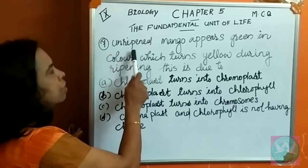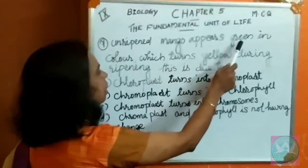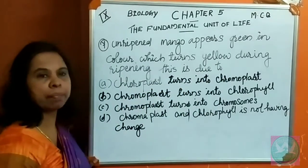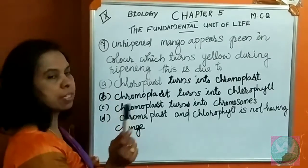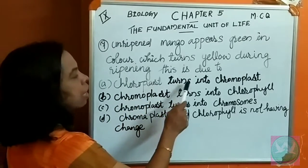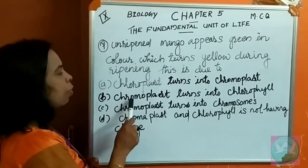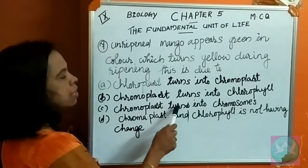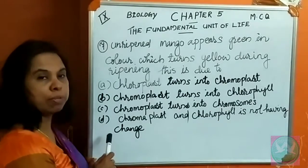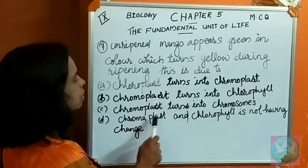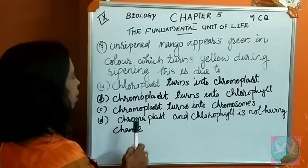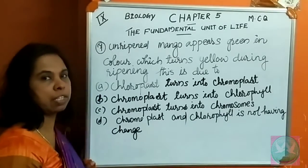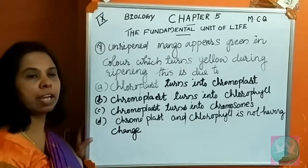Seventh question: unripened mango appears green in colour, which turns yellow during ripening. This is due to: A. Chloroplast turns into chromoplast. B. Chloroplast turns into chlorophyll. C. Chloroplast turns into chromosomes. D. Chloroplast and chlorophyll have no change. You can think and find out the answer.